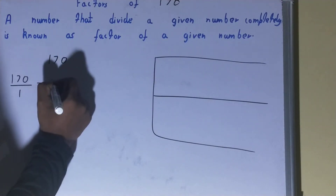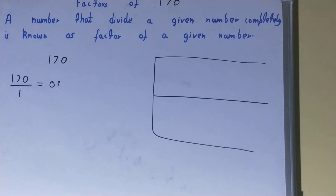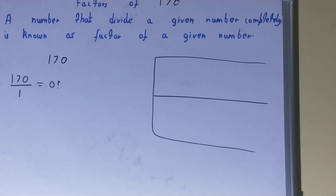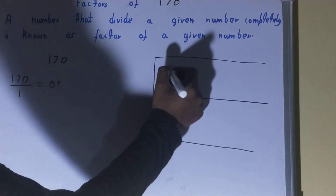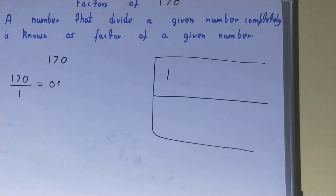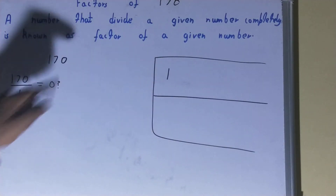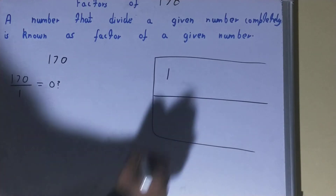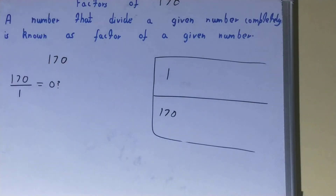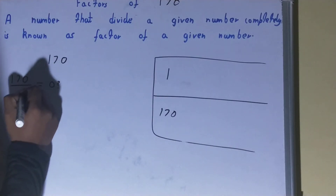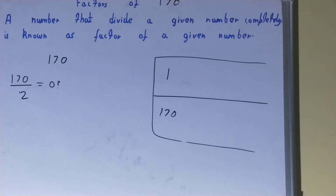Divide 170 by 1 — will you get remainder zero? Yes. So 1 is a factor of 170, and I'll write it in the factor list. Using 1, we can determine another factor: 1 times 170 equals 170, so 170 is also a factor automatically.